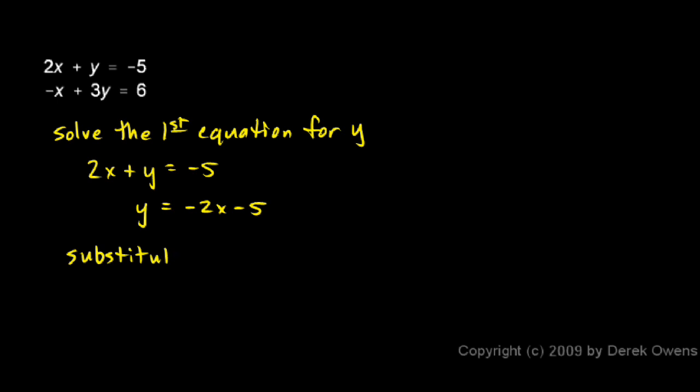I take this equation for y and I substitute it into the other equation. So I'm going to substitute it in for y right there. So I'll write the second equation: -x + 3y = 6, but this is going to go in for y right there. So I'm going to rewrite this equation but instead of y I'm going to write that.